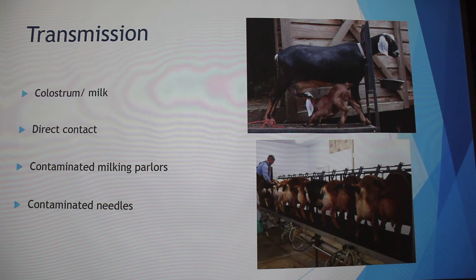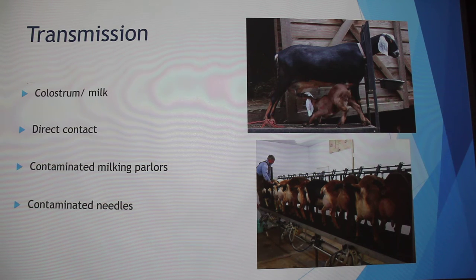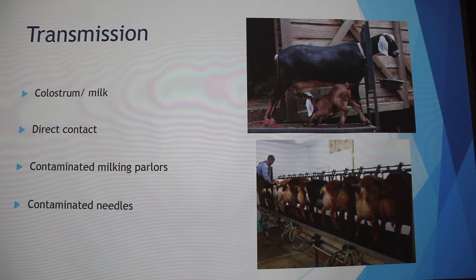There are several ways that transmission can occur for CAE. The most common is through colostrum and milk — if you have a CAE-positive doe, even if the baby does not already have CAE, as soon as it nurses it is automatically infected. You can also get it from direct contact with an infected goat sharing a feed bunk. Contaminated milking parlors also spread it between goats. You can also spread it through contaminated needles — if you give multiple vaccinations to multiple animals and don't change needles, and one of them is infected, you've infected your herd.